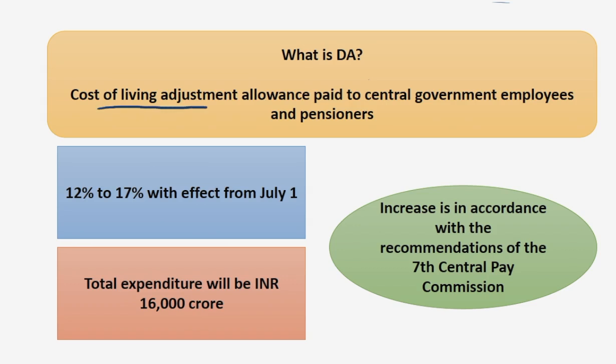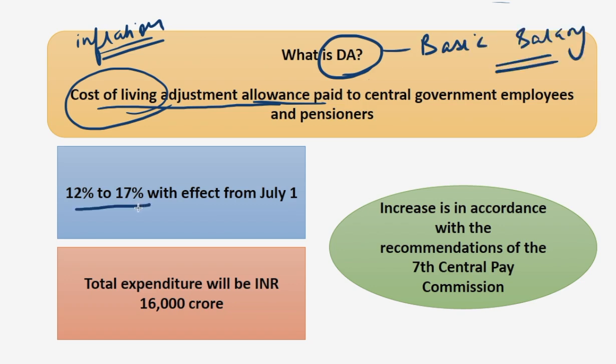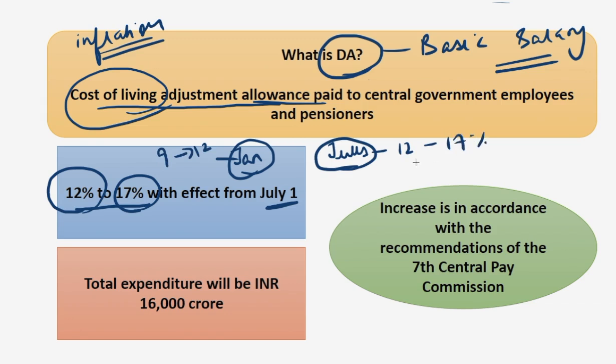DA is the cost of living adjustment allowance paid to central government employees and pensioners. The government is trying to compensate the employees for inflation. The government has raised the dearness allowance rate from 12% to 17% with effect from July 1. Every year there are two revisions in the dearness allowance rates. In January the rate was hiked from 9% to 12%, and in July from 12% to 17%, the highest rate hike by the government.